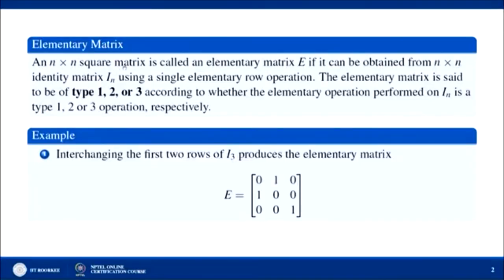Before starting echelon form, we will first look at elementary matrices. An n×n square matrix is called an elementary matrix E if it can be obtained from the n×n identity matrix I_n using a single elementary row operation. There are 3 basic elementary row operations: first, replace any row by multiplying it by a nonzero scalar; second, replace row R_i by R_i plus C times R_j; third, interchange any two rows.